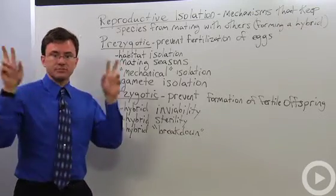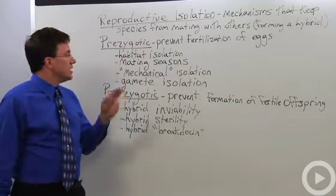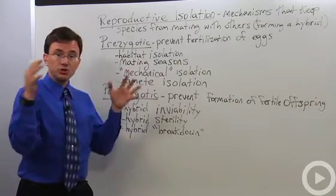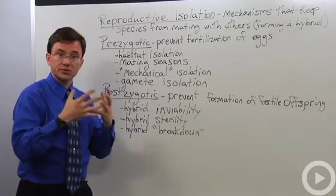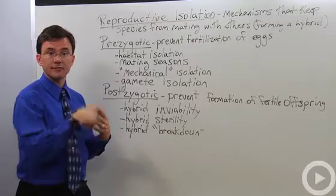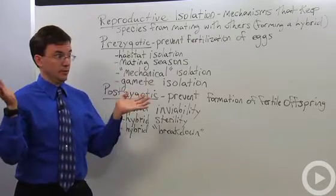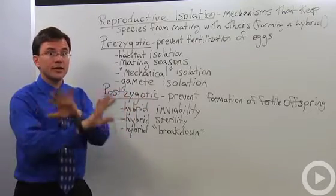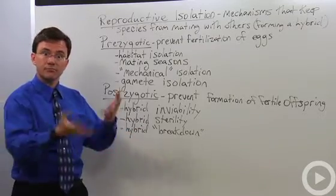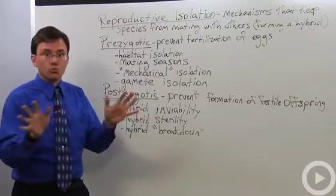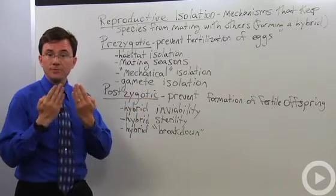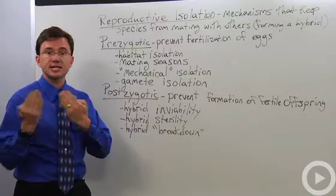Mating seasons, or sometimes they'll call it temporal isolation. If your mating season is the spring, then you will mate with your species during the spring. You will not mate with a species whose mating season is the fall. You walk up to them and say, you want to mate? No, they don't. They're completely disinterested. Meanwhile, fall comes around, they come up to you, want to mate? No, not the time for it. That's another way of keeping two perhaps closely related species separate from each other.